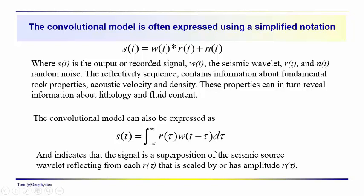We're going to break down the seismic signal, S of t. The components of the signal that we record — this could be the field recorded signal or the processed signal — depend on which stage of the processing flow you're looking at. The signal is usually considered to be a convolution, represented here with an asterisk, which is shown below as an integral.